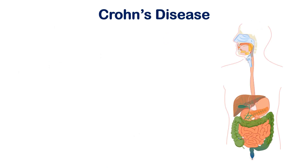Now that you have a general understanding of ulcerative colitis, we can jump into Crohn's disease, and it should become a lot easier. I've already told you that ulcerative colitis has continuous damage starting at the rectum, moving up through the bowel but not continuing further. The difference in Crohn's disease is that it's a segmental damage.